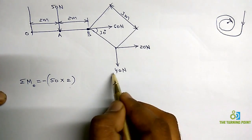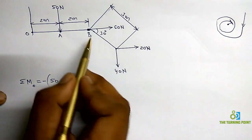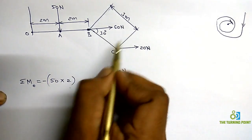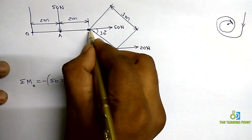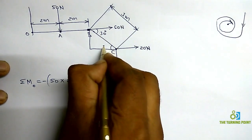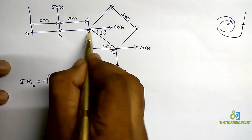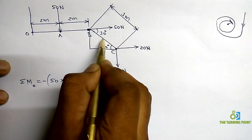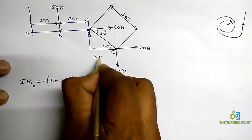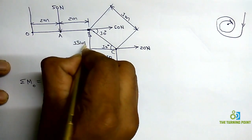The remaining forces are 20 Newton and 40 Newton. I have to consider the perpendicular distance for those two. The BC distance is given as 3 meters. Since this angle is 30 degrees, using the right angle triangle, the components become 3 cos 30 and 3 sin 30.